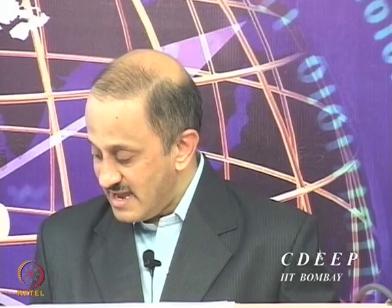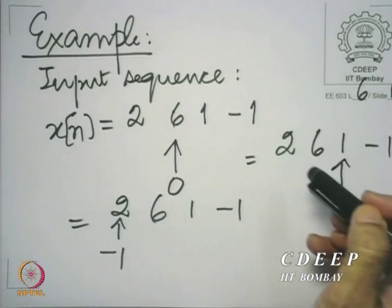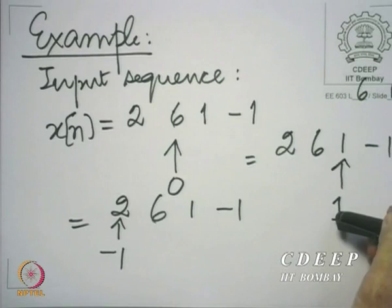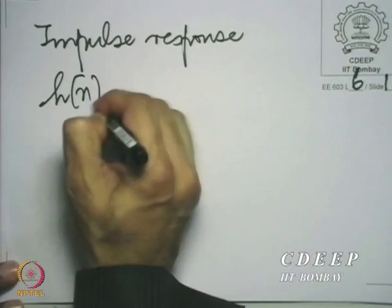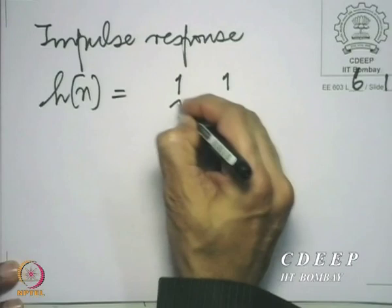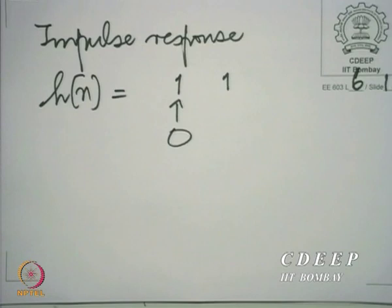The sequence takes values 2, 6, 1, minus 1 respectively at the points n = minus 1, 0, 1, and 2. Similarly, let us take a very simple impulse response — the unit impulse response. Henceforth when we say impulse response we will mean the unit impulse response, and we would not want to keep repeating 'unit' every time. The impulse response is very simple: it is just 1 and 1 respectively at n = 0 and n = 1.